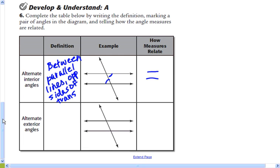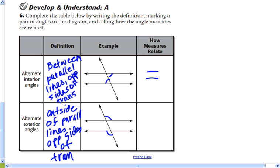And then alternate exterior angles. We can mark those like this. That one there and that one there. Alternate exterior angles are on the outside of parallel lines and they are on opposite sides of the transversal. And they are also equal.